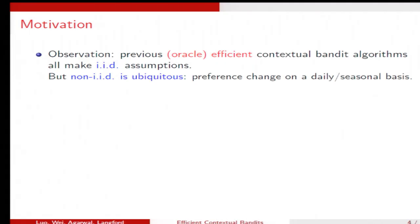Like in the previous example, users may change their preference on a daily or seasonal basis. So our question is, can we have Oracle efficient algorithms that handle non-IID data?